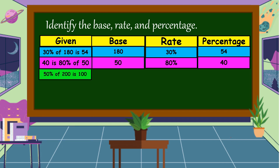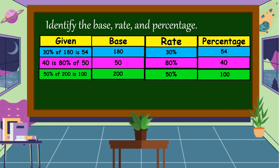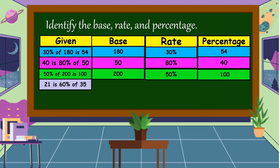Another example: 50% of 200 is 100. What is the base? The base is 200. How about the rate? The rate is 50%, and the percentage is 100.